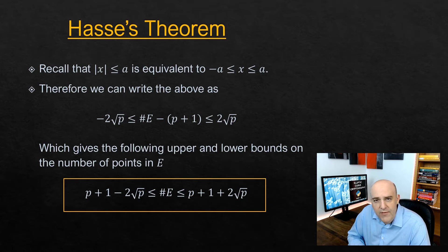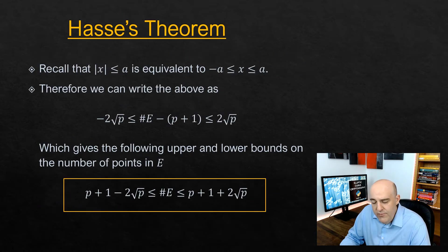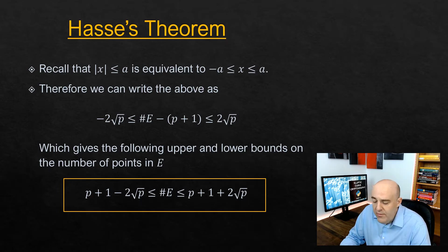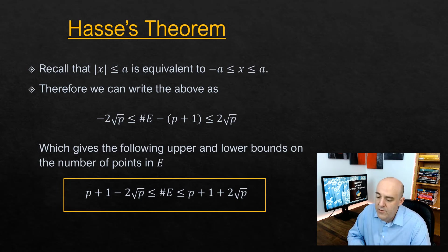Just remember: when we write |X| ≤ A, that's the same as saying X is between -A and A. So in the above inequality, the absolute value of the difference being less than or equal to 2√P means that -2√P ≤ (#E - (P+1)) ≤ 2√P. If we add P+1 everywhere, we obtain upper and lower bounds for the number of points in E: P+1 - 2√P ≤ #E ≤ P+1 + 2√P.